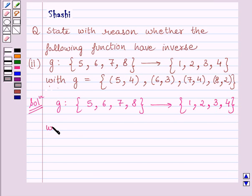with g equal to the set of ordered pairs (5,4), (6,3), (7,4), and (8,2).